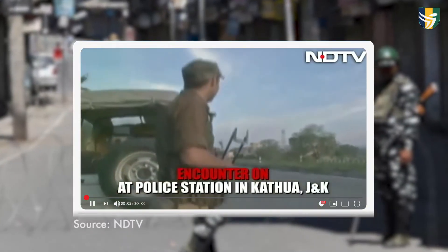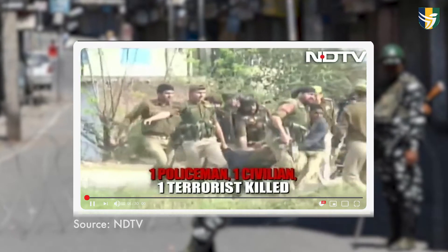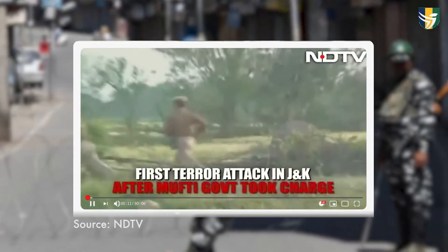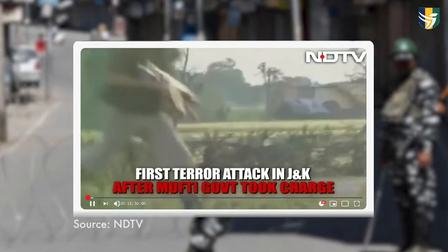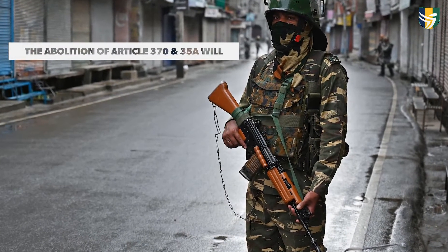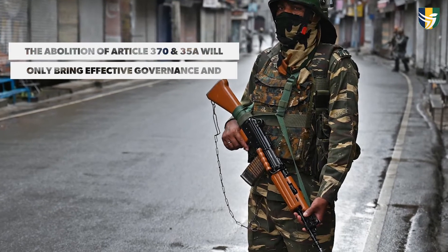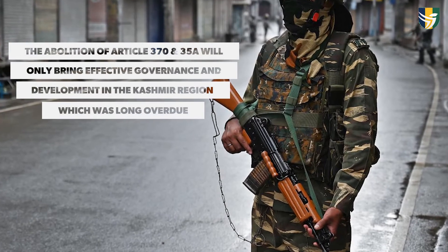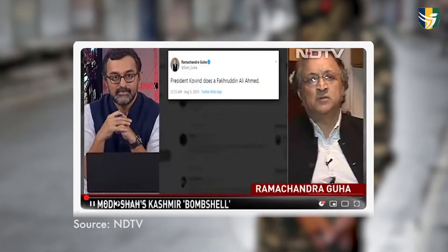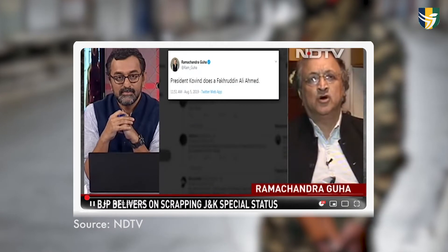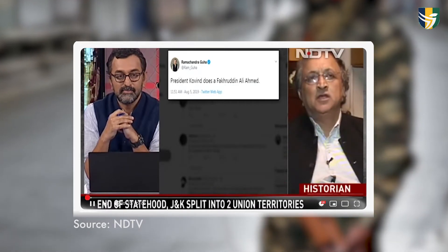Due to its special status, J&K had witnessed issues related to security, terrorism, the role of external actors, and human rights violations, which also saw the loss of many soldiers' lives. According to the government, the abolition of Article 370 and 35A would only bring about effective governance and development in the Kashmir region, which was long overdue. However, due to the sudden way it was implemented, the abolition was criticized by social critics on humanitarian grounds as an act of unbiased majoritarianism.